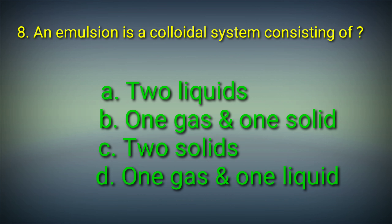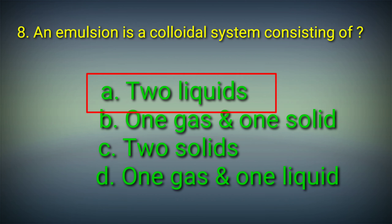Eighth question: An emulsion is a colloidal system consisting of — Options: A. 2 liquids, B. 1 gas and 1 solid, C. 2 solids, D. 1 gas and 1 liquid. Answer: Option A. 2 liquids. An emulsion is a colloidal system consisting of 2 liquids.